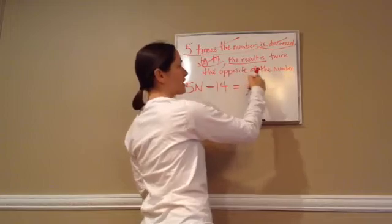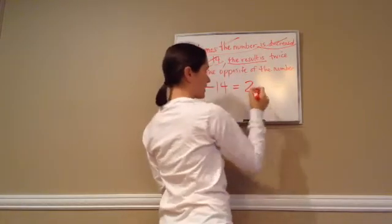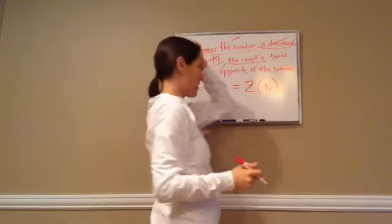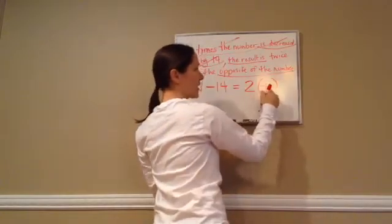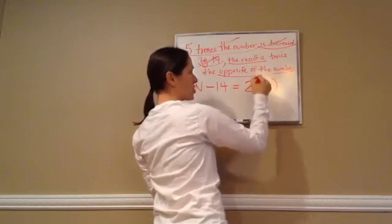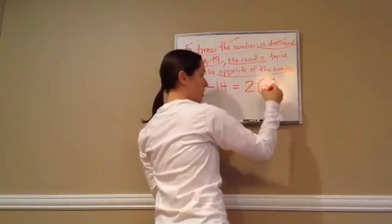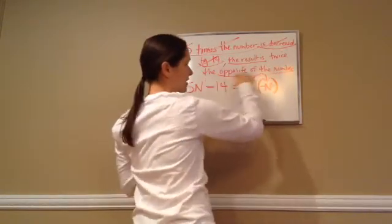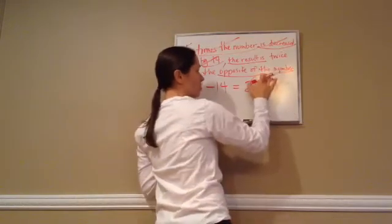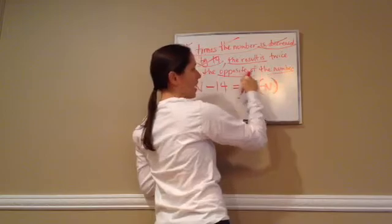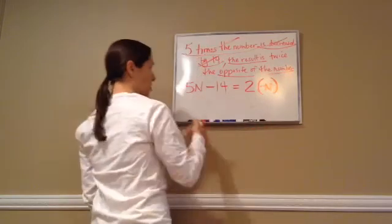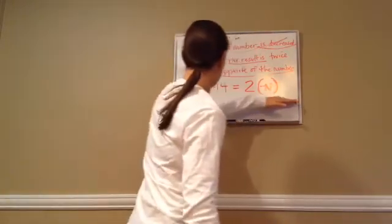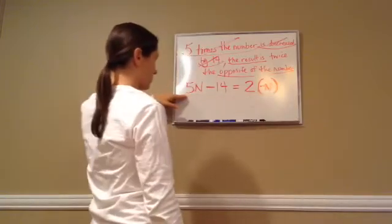The result is — meaning equals — twice the opposite of a number. Twice what? The opposite of a number. The opposite of is always another way of saying negative. So the opposite of a number is negative n, and then it's twice that: 2 times negative n. Put this in parentheses because you're multiplying twice the opposite of the number. So all you're learning today is how to write the equation — we already know how to solve.